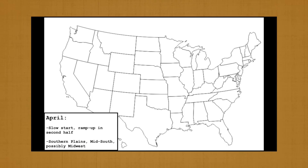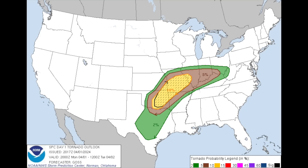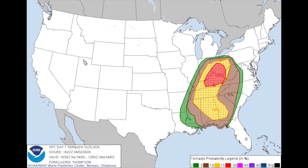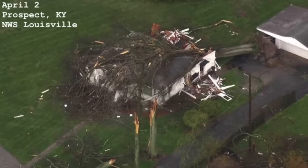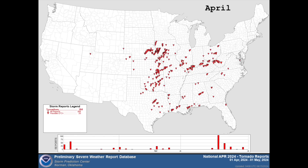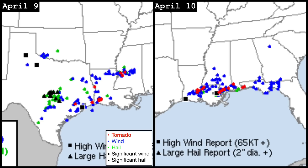Our forecast called for the relative quiet of March to continue into early April before tornadic activity picked up toward the back half of the month, in particular across the southern plains, the Mid-South, and the Midwest. April began with back-to-back significant tornado risks. The corridor from Oklahoma to Illinois was under the gun on the 1st, while the threat increased and shifted east into the Ohio River Valley on the 2nd. These two days produced nearly 100 tornado reports combined, including multiple significant tornadoes in Illinois, Indiana, Kentucky, and West Virginia on the 2nd. We subsequently entered into a bit of a lull across most of the country as expected, outside of a couple days of elevated activity along the Gulf Coast on the 9th and 10th.